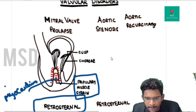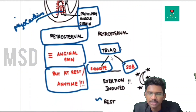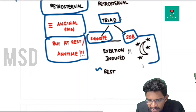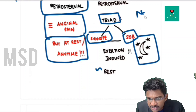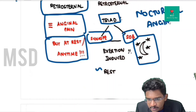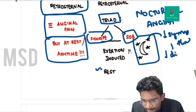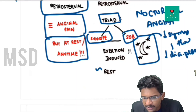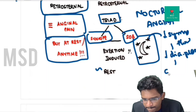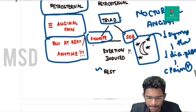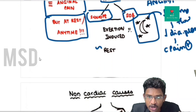In aortic regurgitation, one characteristic feature is nocturnal angina — pain exacerbated at night. The reason is the same: at night, decreased sympathetic outflow means the coronaries are not adequately filled, leading to chest pain. Nocturnal angina is characteristic of aortic regurgitation.